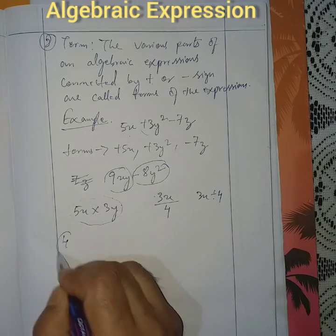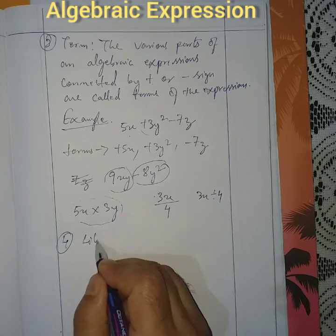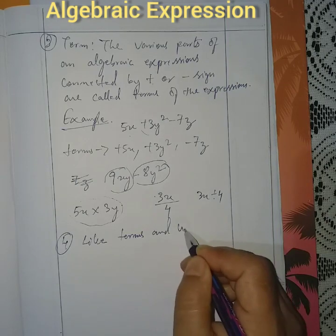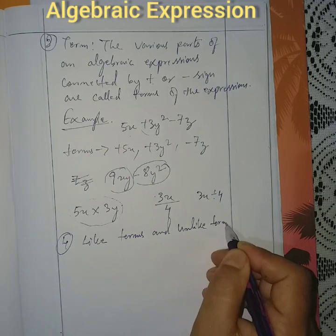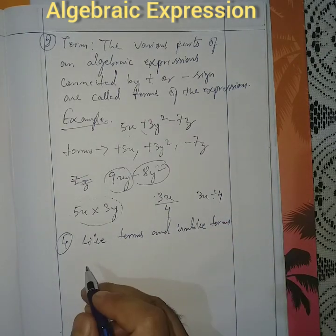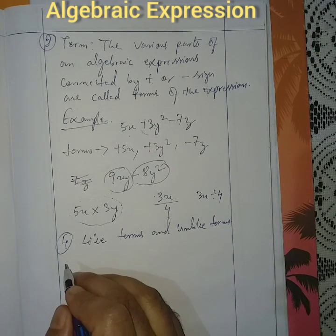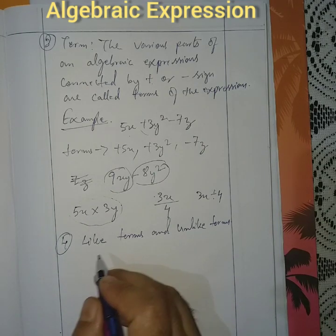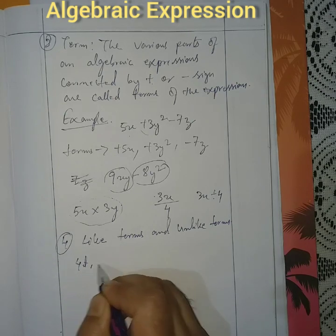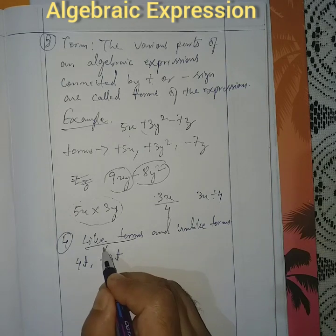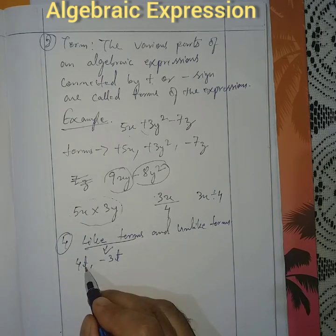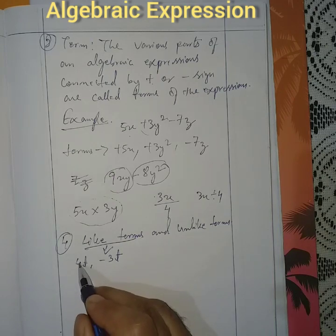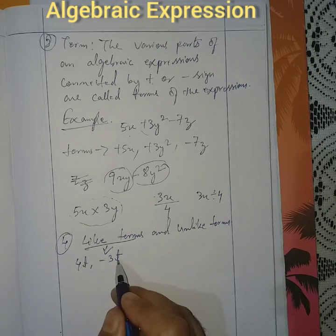Number 4: like terms and unlike terms. The terms whose variable parts are exactly the same are called like terms. For example, 4t and minus 3t are like terms — the variable part is the same, and only the numerical values are different.